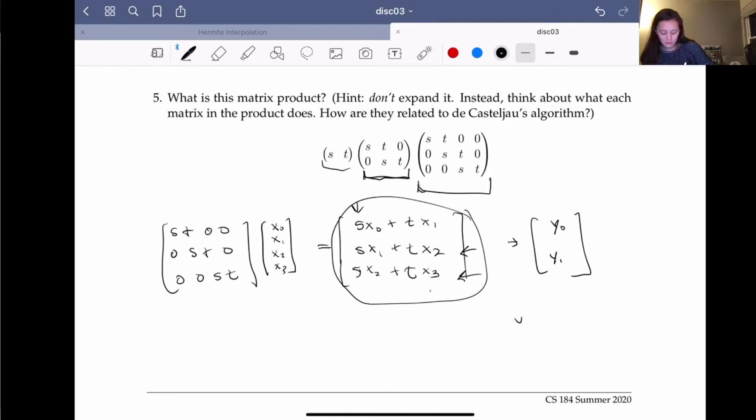And then the last one will just give us s*y0 + t*y1, which is one point. And that is exactly the same process as the DeCasteljau's algorithm. So this is really just the matrix form of taking four control points and determining a point on our Bezier curve.